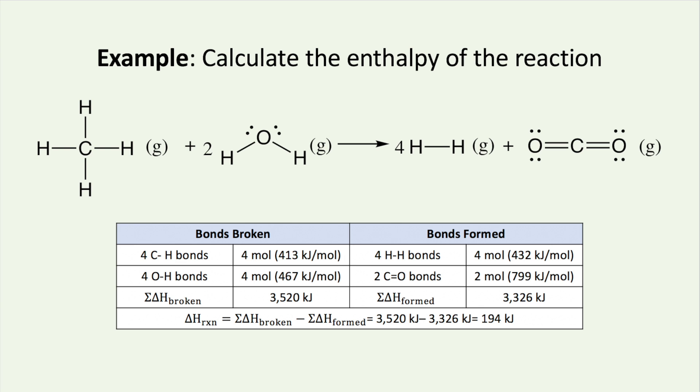If we wanted to represent this enthalpy per mole of methane, we would divide it by the stoichiometric coefficient, which in this case is one mole, so our final answer would be 194 kJ per mole for one mole of methane.